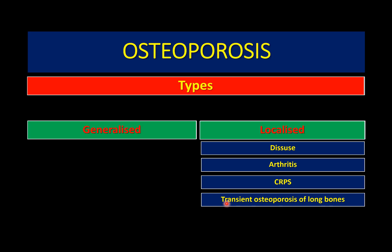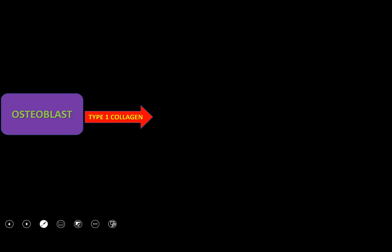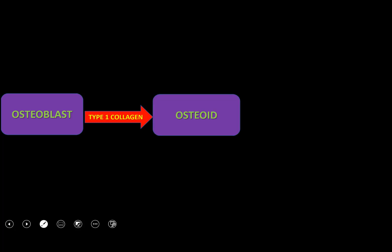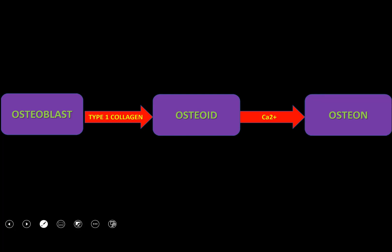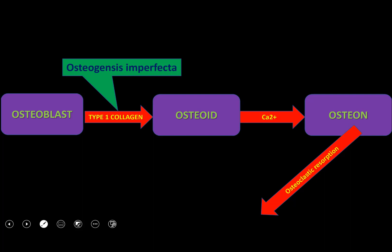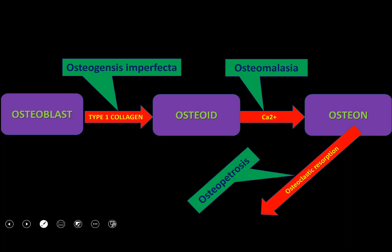Bone develops from osteoblasts which deposit type 1 collagen to form osteoid, which then undergoes calcification to form osteon — a calcified mature bone. This osteon must be continuously acted upon by osteoclastic cells, with continuous resorption and recalcification occurring. This cycle is essential for maintaining the tensile strength of the bone. Different diseases affect this cycle: osteogenesis imperfecta causes abnormal collagen, osteomalacia and rickets cause improper calcium deposition.